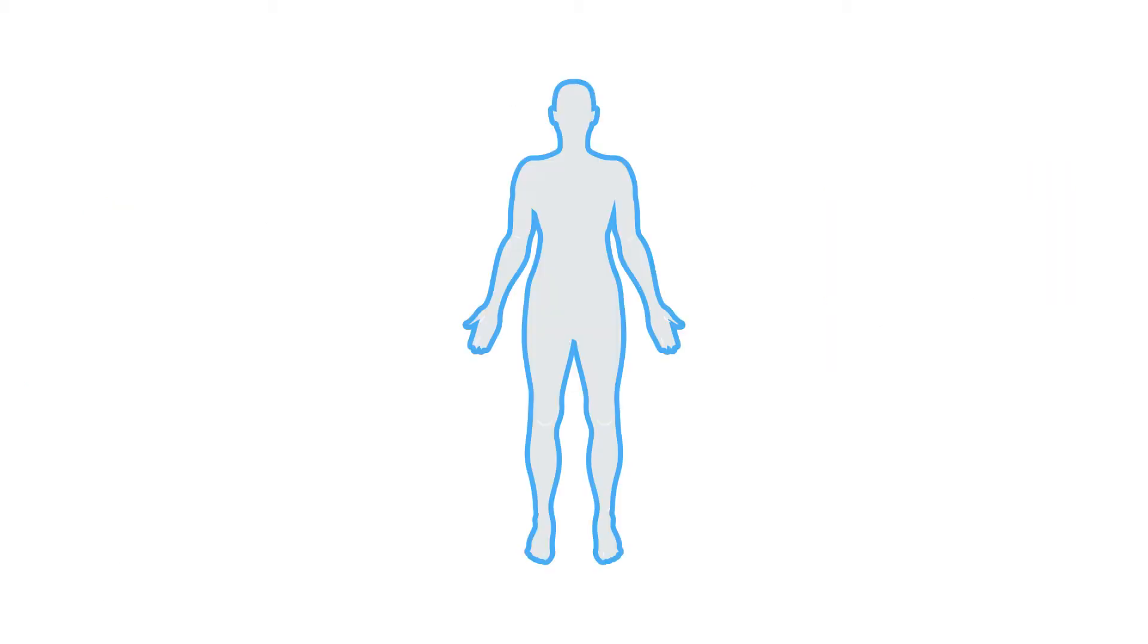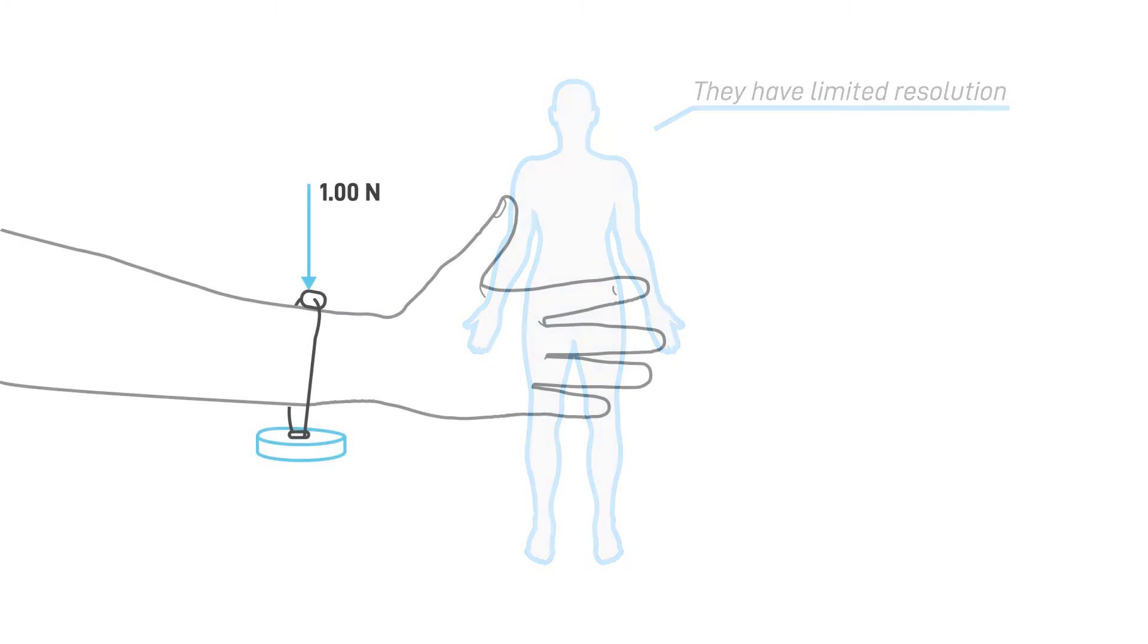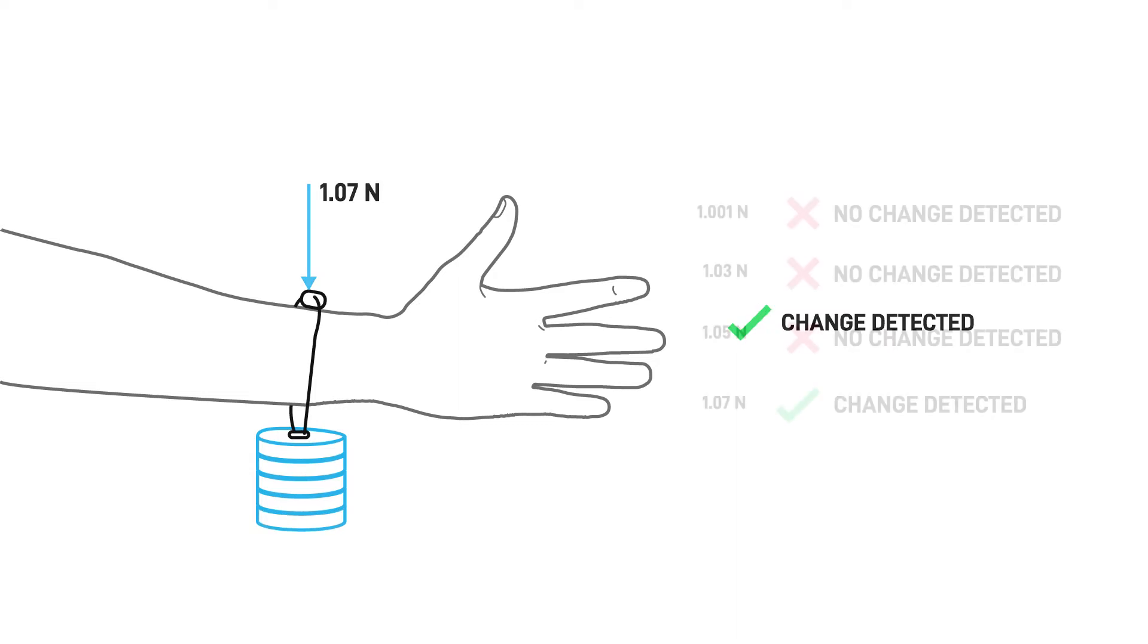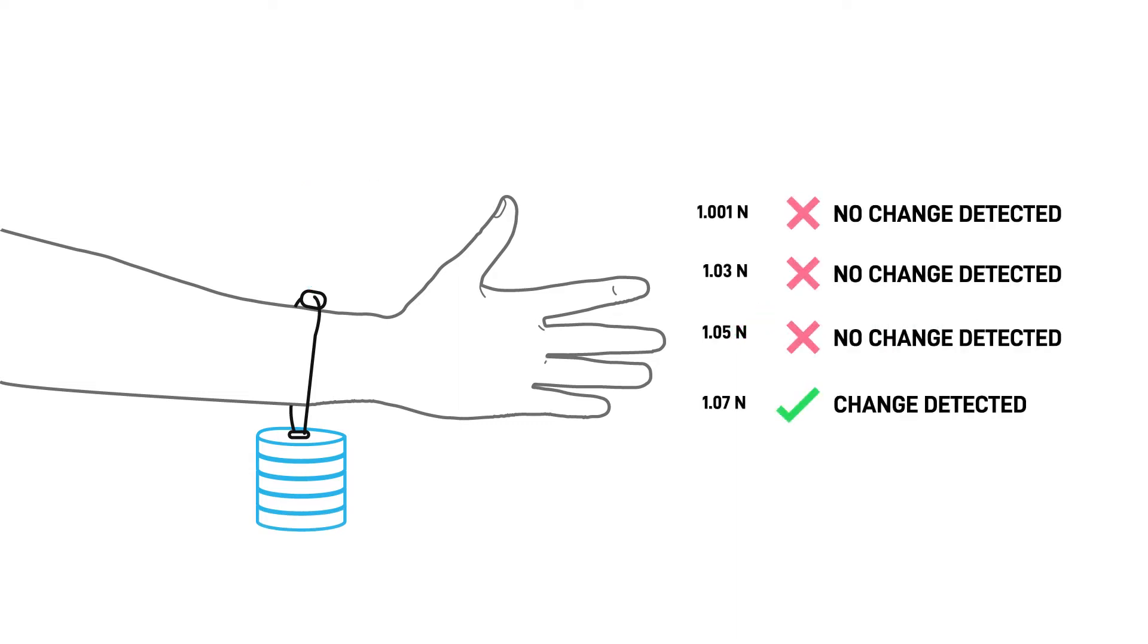Our sensory receptors are not perfect. They have limited resolution. One interesting question for researchers is how much one should change the physical stimulus, such as a light or force, for humans to be able to detect that there was a change. This value is called the just noticeable difference, or JND, of the stimulus.